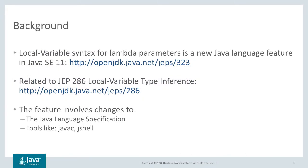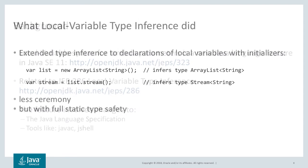In this section, we're going to talk about local variable syntax for Lambda Parameters, which is a new feature included in Java SE 11. This feature is related to a previous feature named Local Variable Type Inference, which had a broader goal as it affected local variables, which are in general more frequent than Lambda Parameters. This new feature implies changes to the Java language specification and tools like javac and JSL.